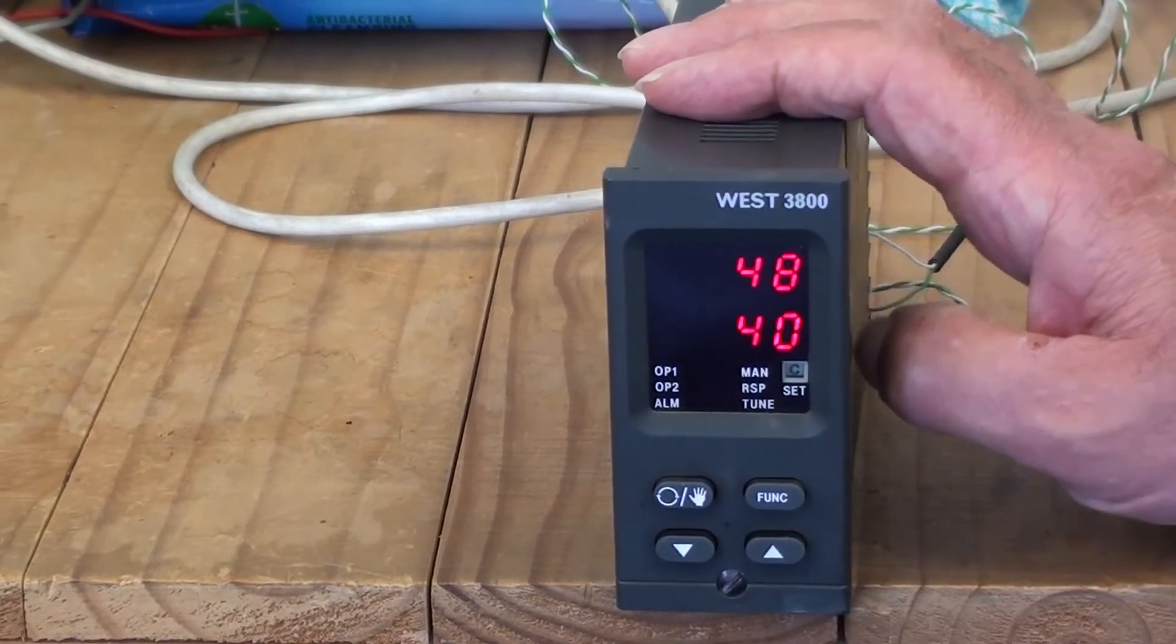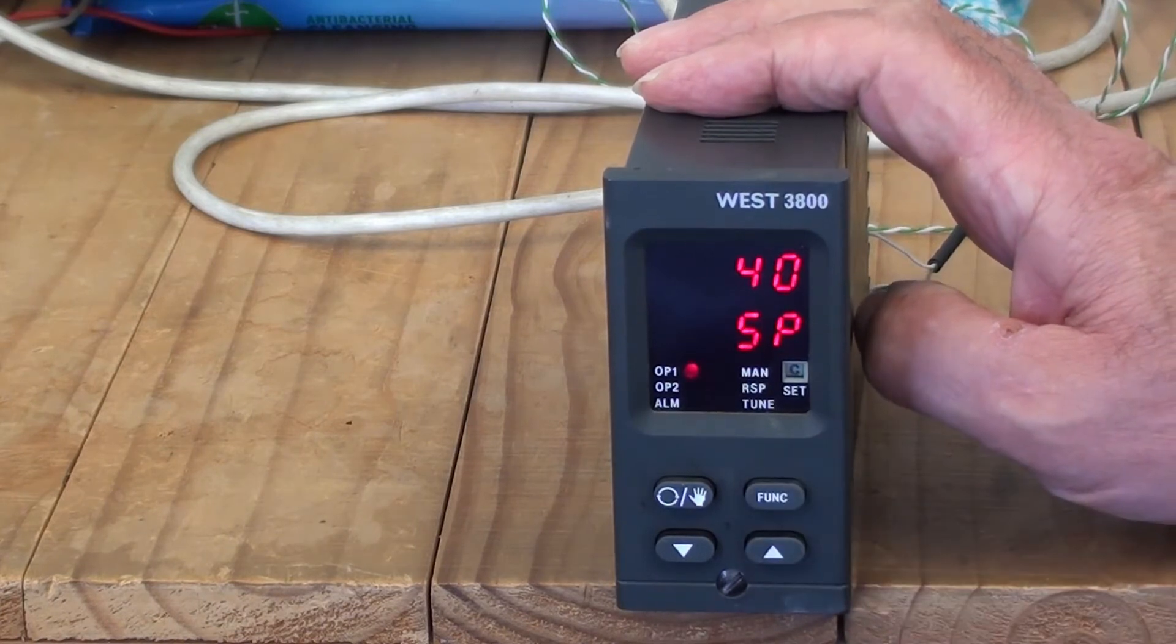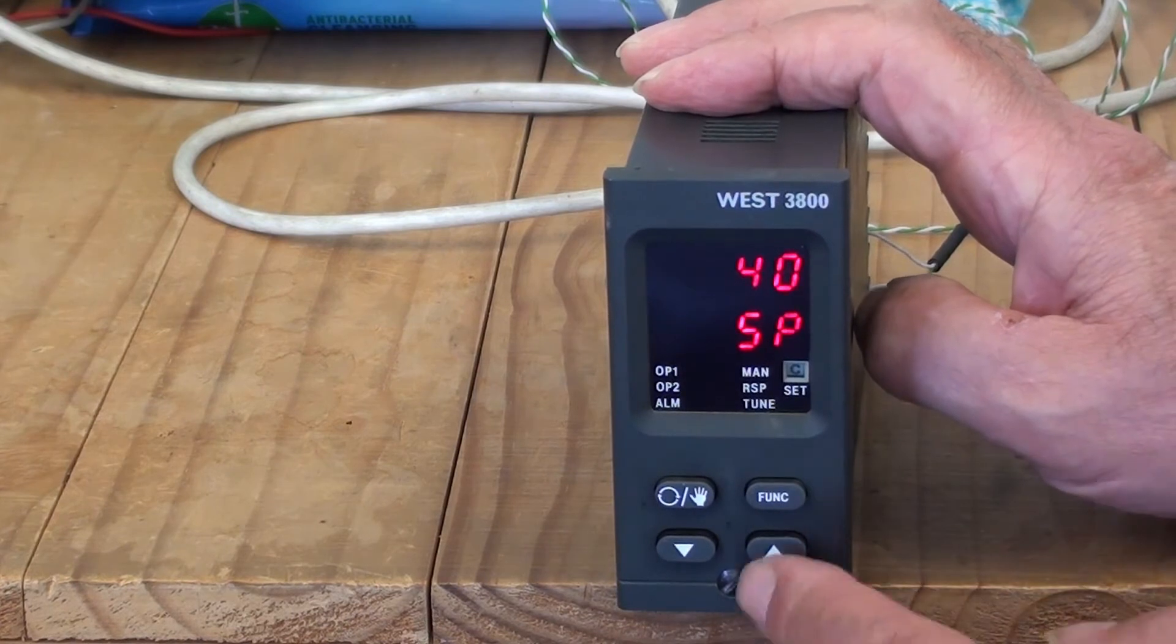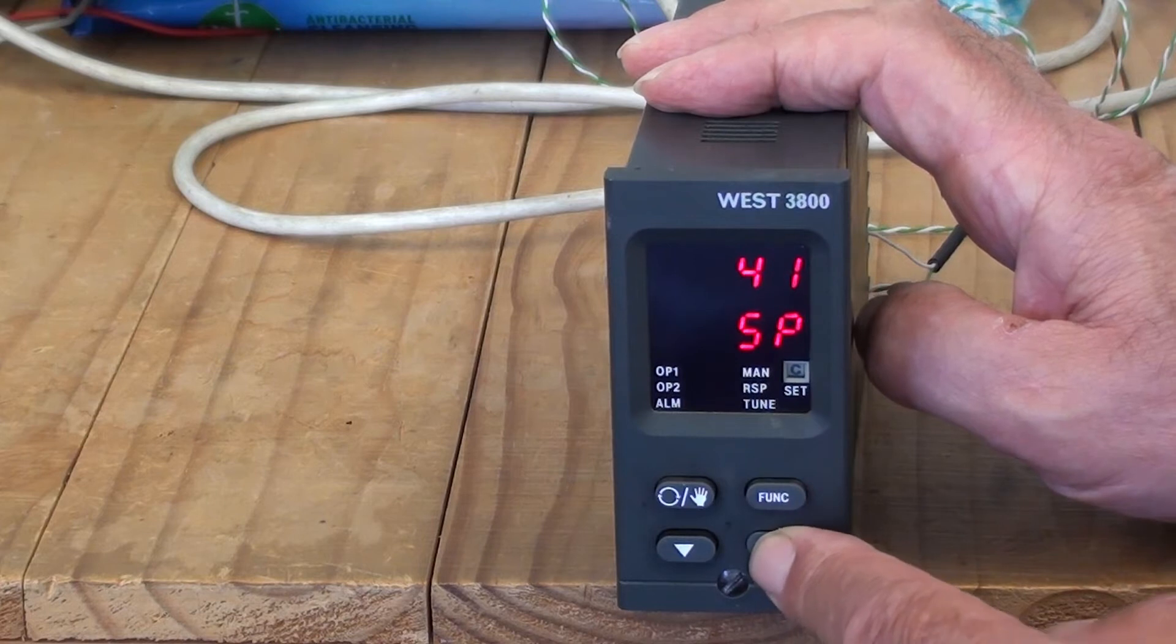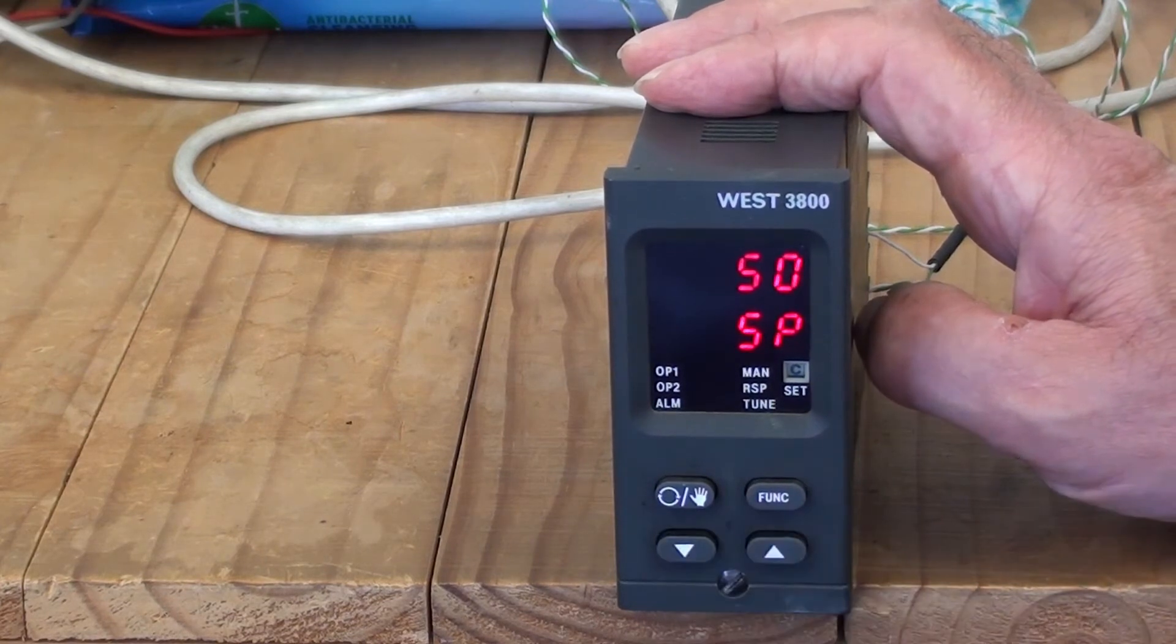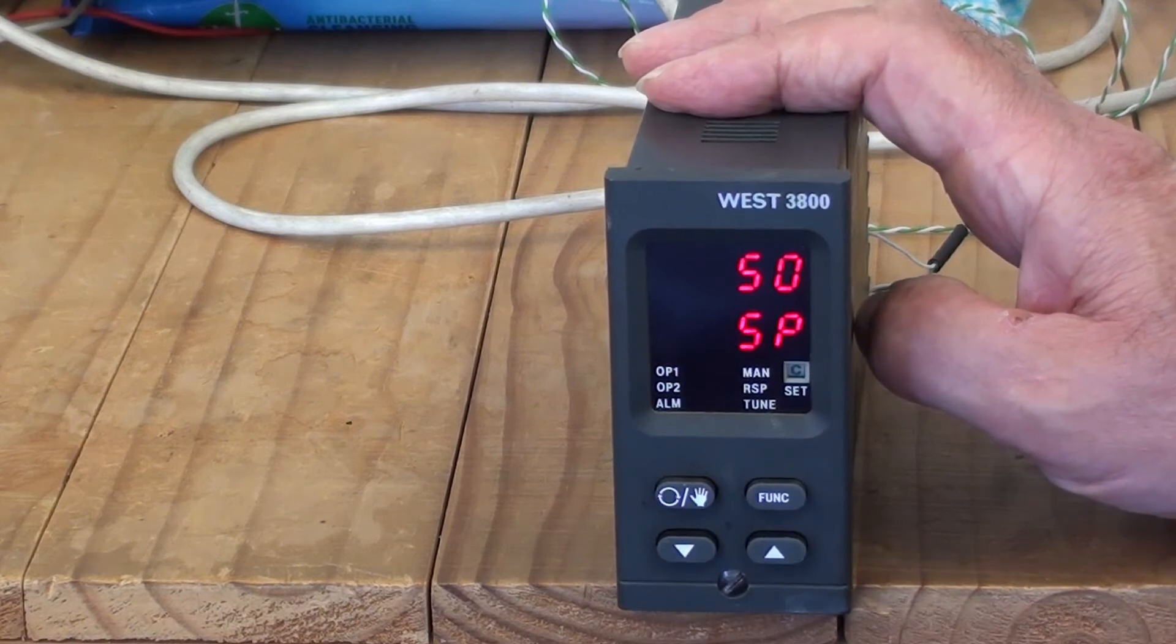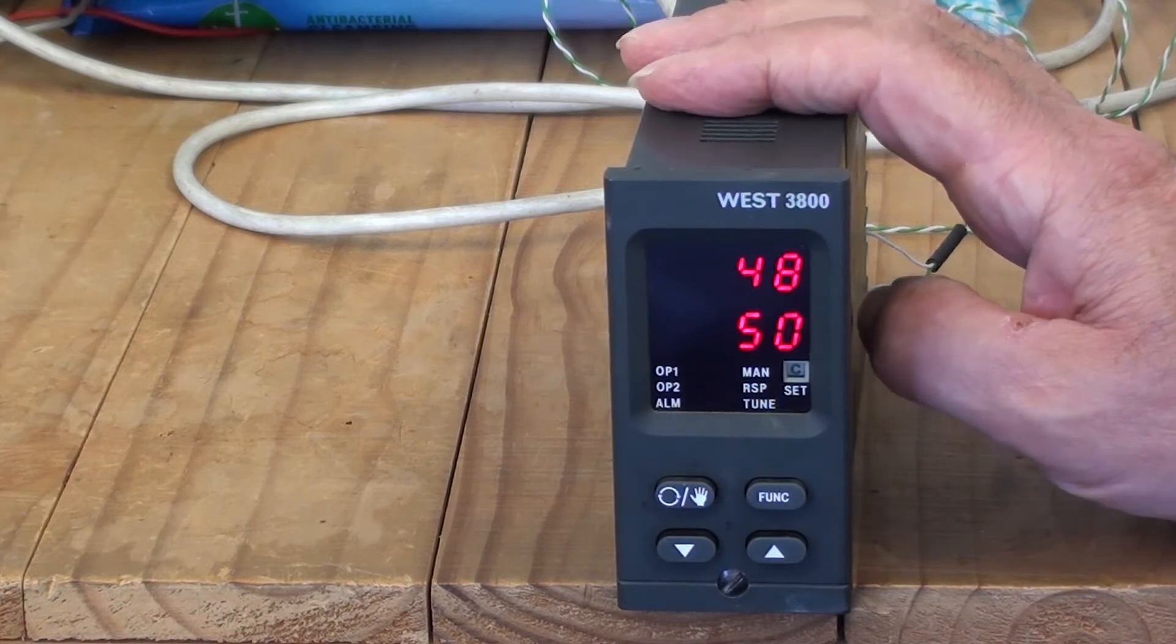To change the setpoint, press the function key and it will now show setpoint ISP on the bottom and the current value on the top. Use the up and lower arrows to change the setpoint, and then once you've decided on the new setpoint value, press the function key and you are now back into the operation mode.